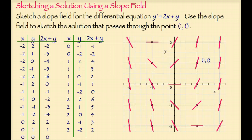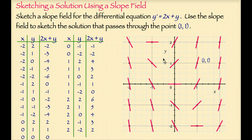On this slide, a more extensive slope field is sketched for the differential equation y prime equals 2x plus y. For each of the 25 ordered pairs in the coordinate plane, the slope was calculated using the differential equation 2x plus y. Then short line segments are drawn through each ordered pair depicting the slope at each of those ordered pairs. Now we're going to use this slope field to sketch the solution that passes through the point 1, 1. Using the shape of the slope field, we sketch a curve that goes through the point 1, 1. This curve represents the particular solution of the differential equation 2x plus y which passes through the point 1, 1.